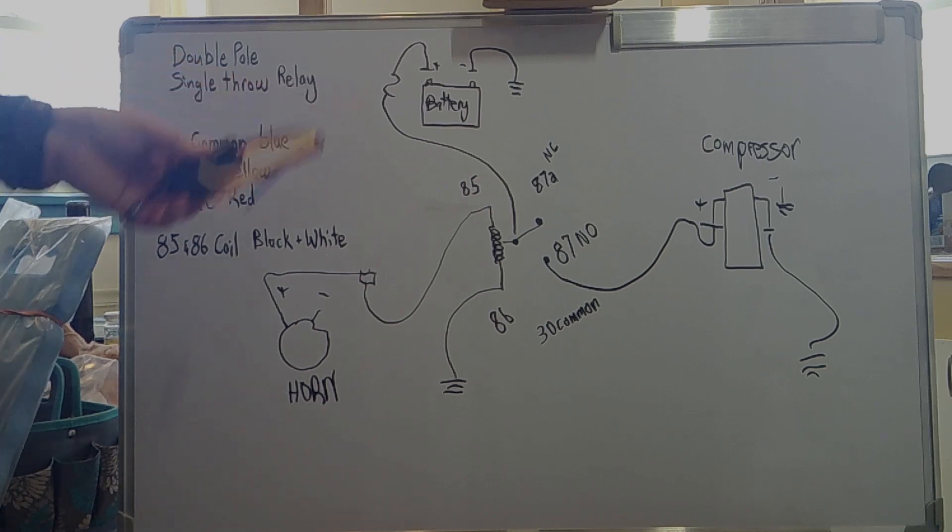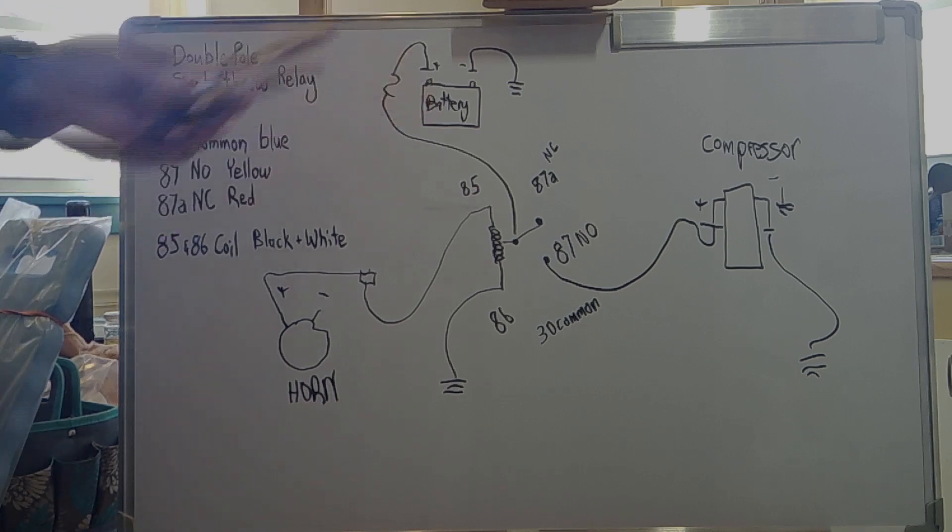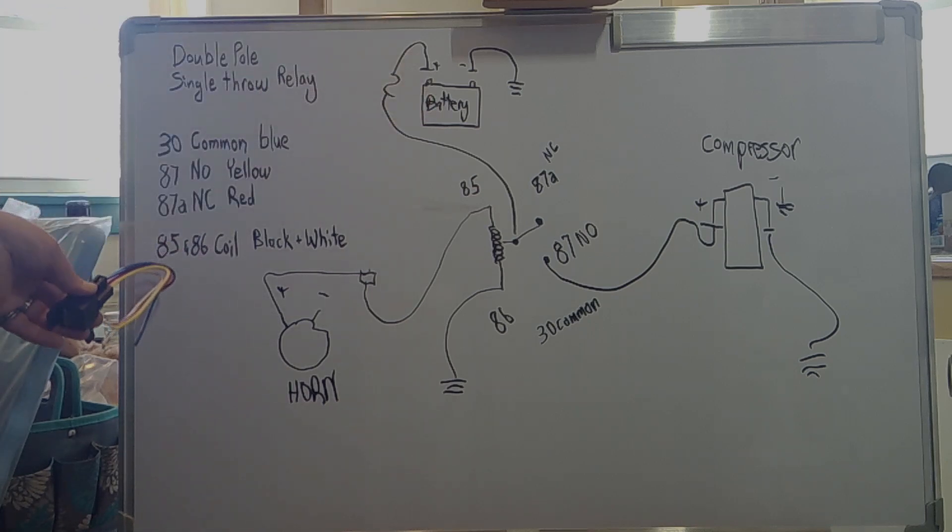87A would be your normally closed circuit, which is the red wire. And your coils are pin 85 and 86. It's not that complicated. It might sound a little confusing, but that is the operation of a double pole single throw relay.